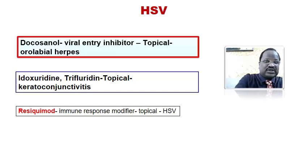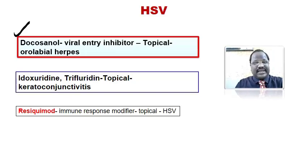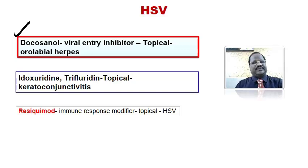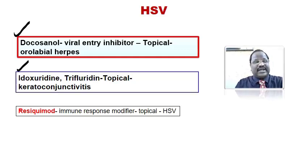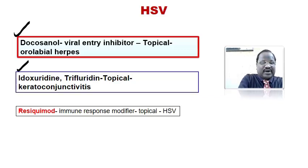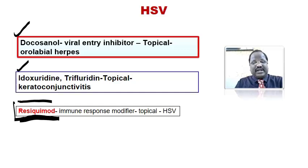For topical treatment of herpes simplex, we have docosanol — a viral entry inhibitor given topically, used for oral labial herpes infection. We also have drugs like idoxuridine and trifluridine, which are topically useful for keratoconjunctivitis caused by herpes simplex. We also have resiquimod, an immunomodulator used topically for treatment of herpes simplex virus infection.